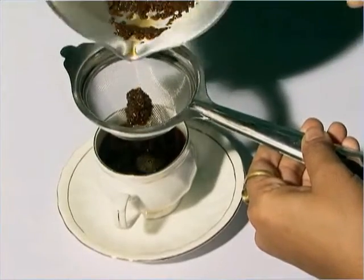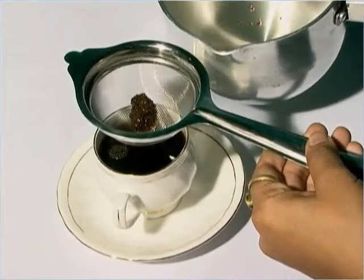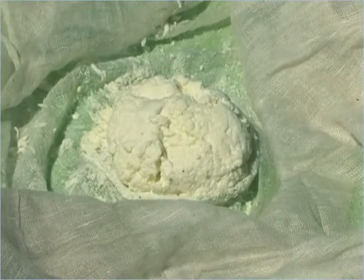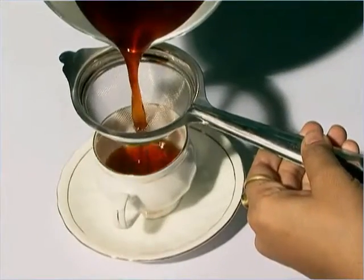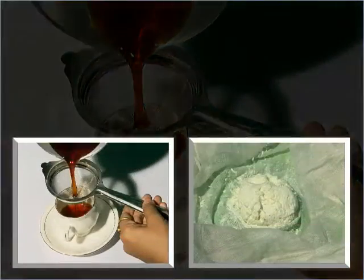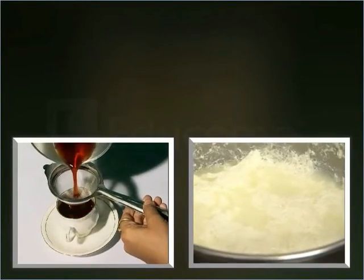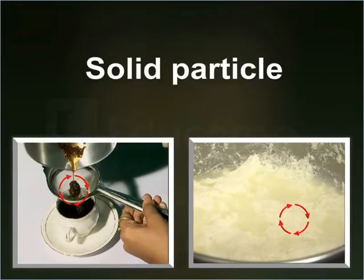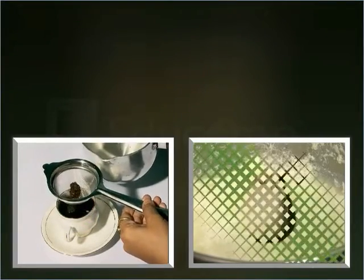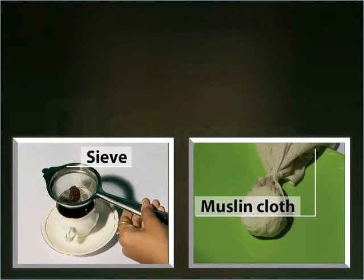Similarly, you must have also seen your mother preparing and serving tea. In this case she separates tea leaves from tea by using a sieve. Separations like cheese from the liquid and tea leaves from tea are examples of the same separating technique called filtration. Filtration is a technique used for separating insoluble solid particles from a fluid by means of a filter, like the muslin cloth and sieve in these examples.